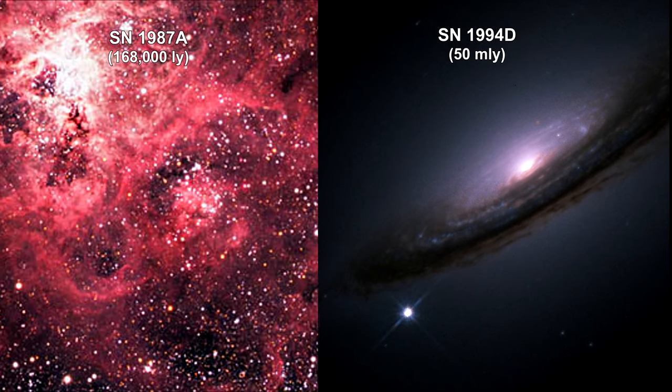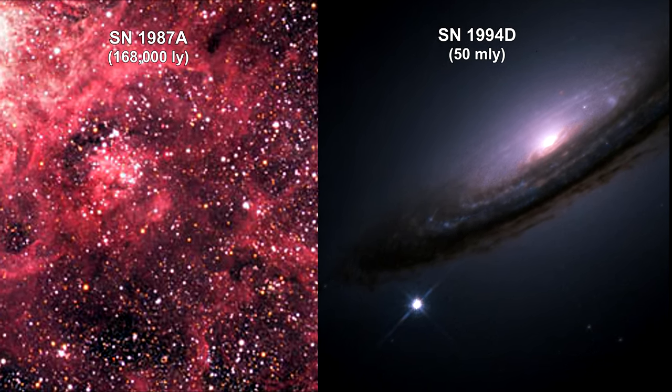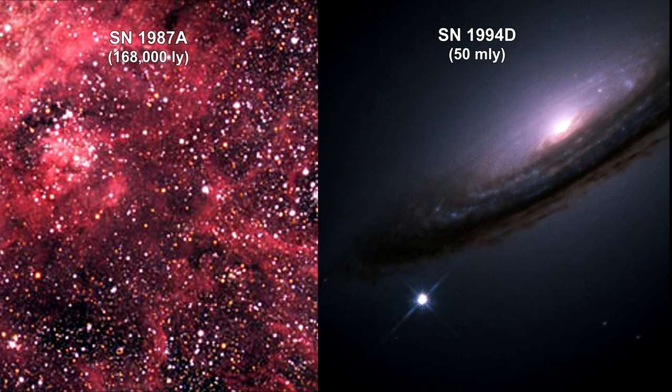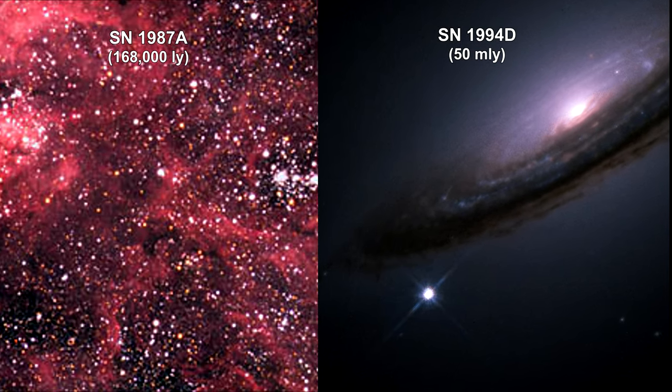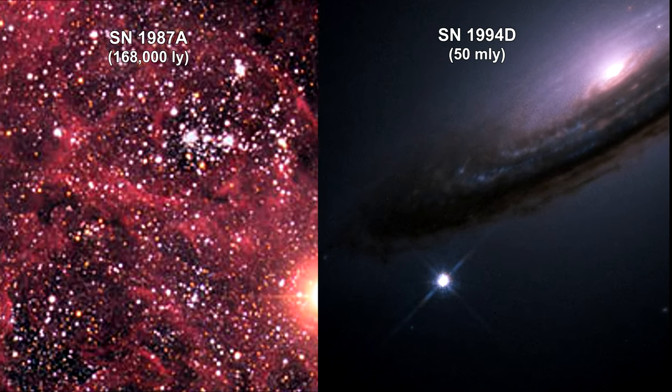After Hubble discovered the universe was expanding, it was assumed that it started off with a tremendous expansion rate, and because of the gravitational attraction of all the matter in the universe, the expansion would be slowing down.